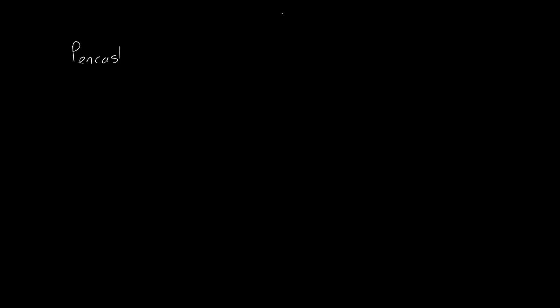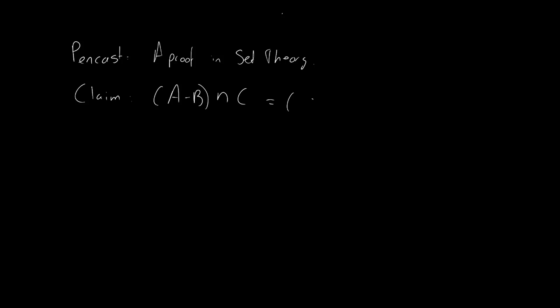Hi there and welcome to another pencast for the course Reasoning and Logic. This one is about proving a set equality. What we're going to do is prove that two sets are the same: specifically, (A minus B) intersected with C equals (C minus B) intersected with A.